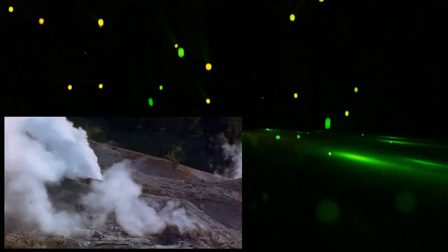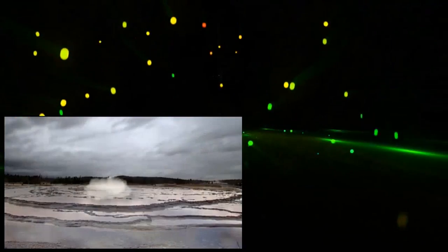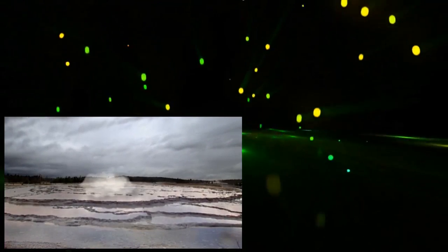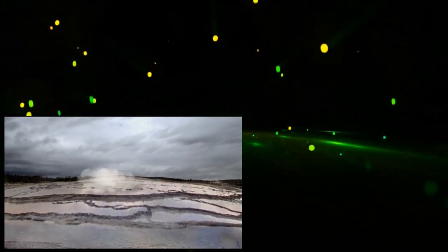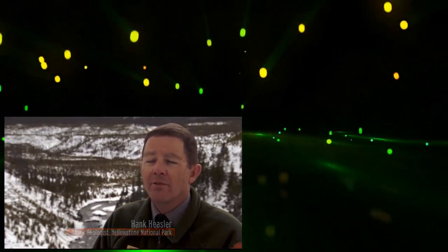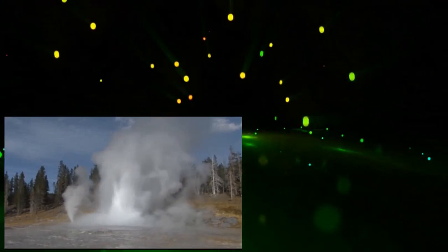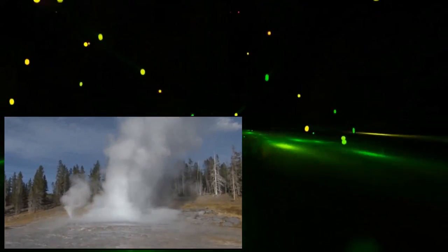The first sign of trouble will be increasing seismic activity. The ground would rise as pressure from the molten rock begins to grow. There would be a lot of ground deformation, and we would start seeing large changes in the geyser basins.